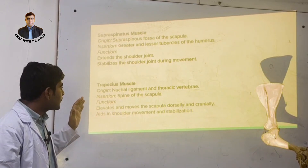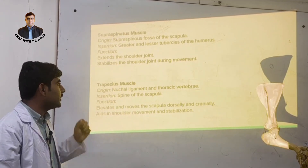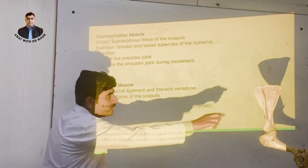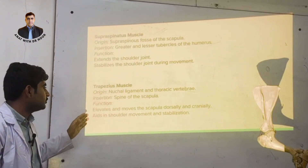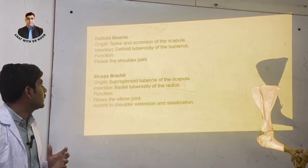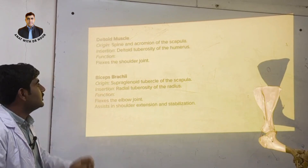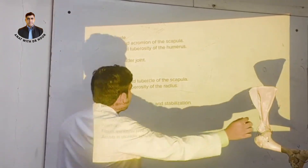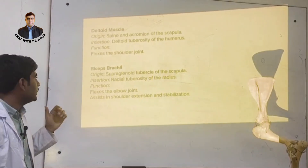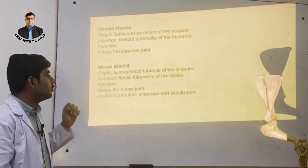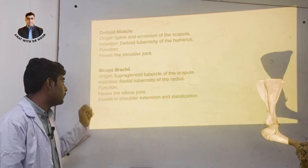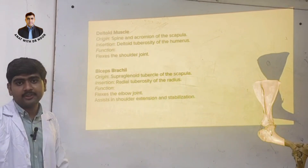The trapezius muscles originate from the nuchal ligament and the thoracic vertebrae, insert into the spine of the scapula, and their function is to elevate and move the scapula dorsally and cranially. The deltoid muscles originate from the spine and acromion of the scapula and function to flex the shoulder joint. The biceps brachii muscles originate from the supraglenoid tubercle of the scapula, flex the elbow joint, and assist in shoulder extension and stabilization.